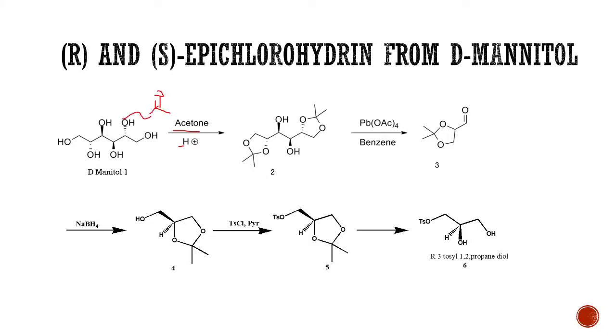It will be protected like this, so we get this type of compound 2 which has cis diol in between and acetal protected two diols on the other sides. The next reaction is oxidation of this 1,2-diol with lead tetraacetate.